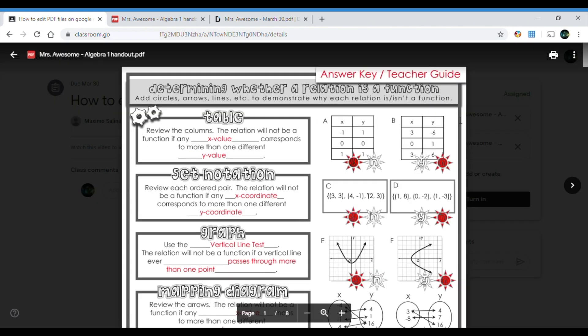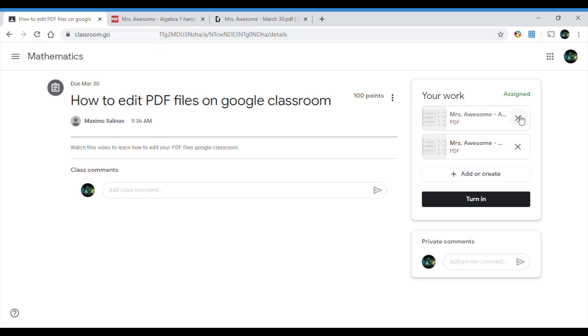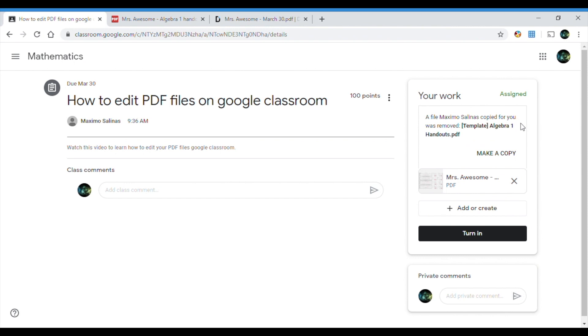If you want to see what this one is, you click on it. This is the old version. So it's very important now that what we're gonna do is we're gonna get rid of this one because I don't want to confuse my teacher. So I'm gonna click the close arrow and I'm gonna put my cursor on here and making sure that I'm gonna delete the right one. Mrs. Awesome, Algebra 1 handout. I do not want that one. So I'm gonna click X.